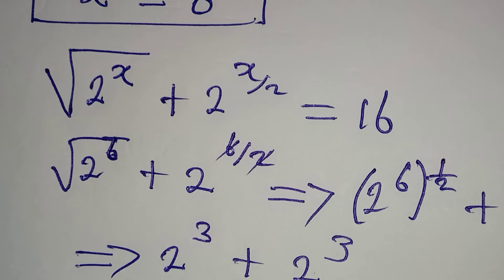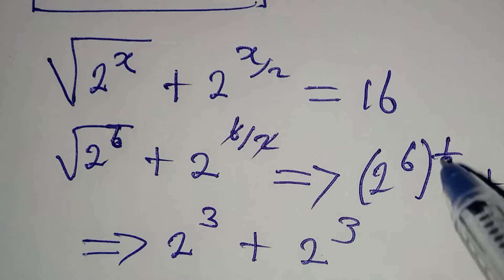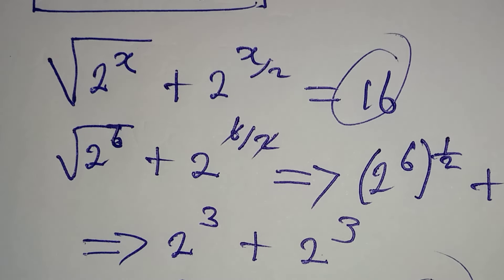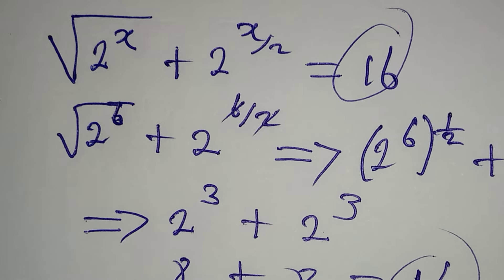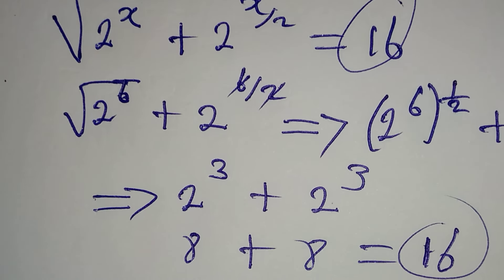Remember that this is the same thing as 2 to the power of 6 to the power of 1 over 2, plus here we have 2 to the power of 3, because 6 divided by 2 is 3. From here, let's continue. 2 can actually go here, so we have 2 to the power of 3 plus 2 to the power of 3. And 2 to the power of 3 is 8, so we have 8 plus 8, and that is giving us 16. If you check, you see that it is 16 we had on the right hand side. So this confirms that our x equal to 6 is very correct.